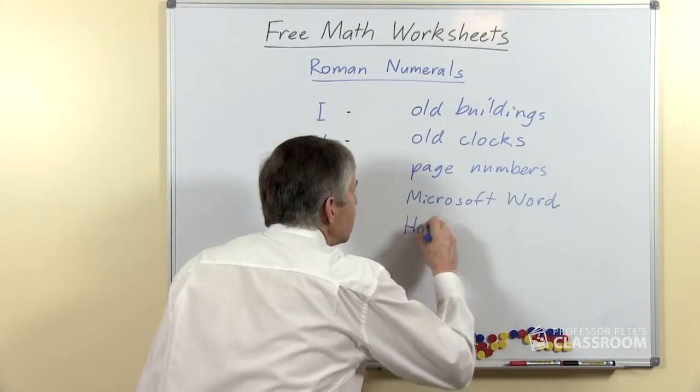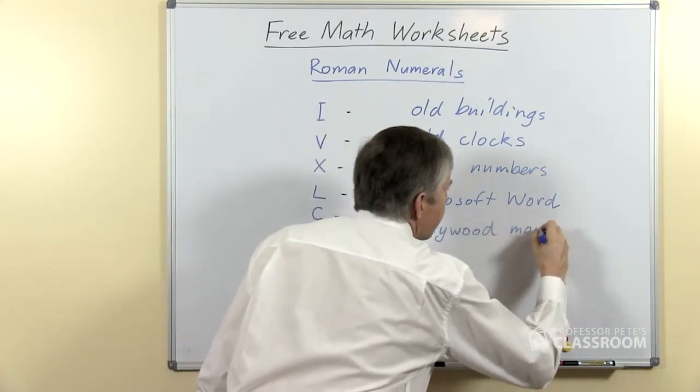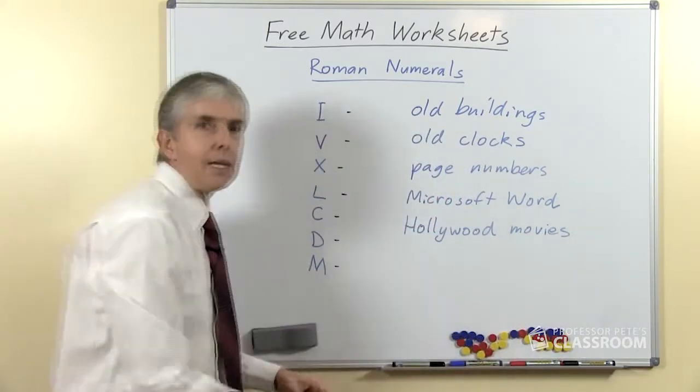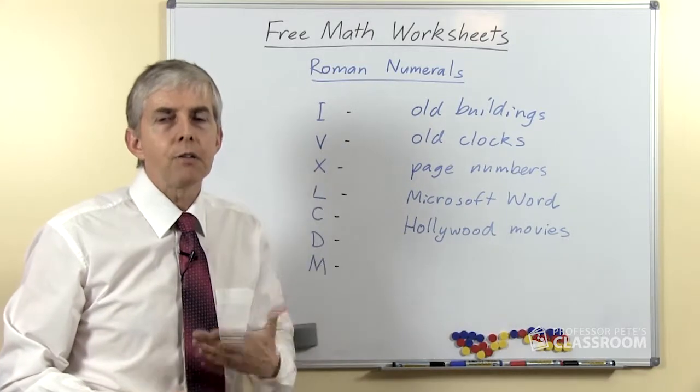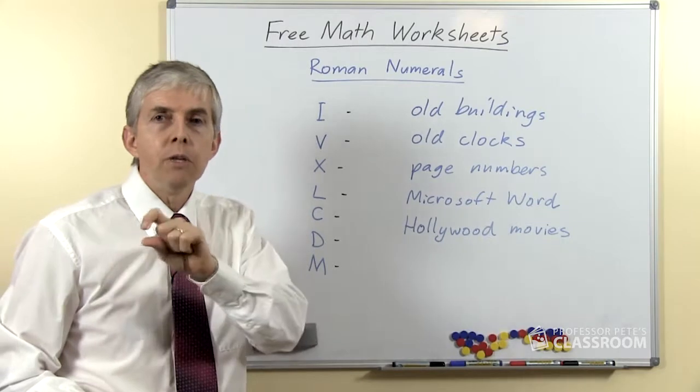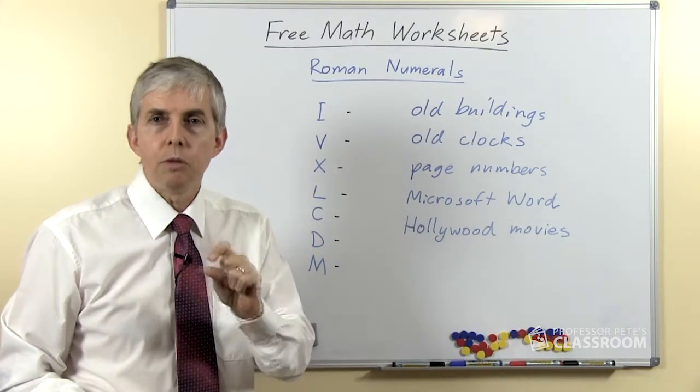And the last one, you might have noticed this yourself in Hollywood movies—not in the movie itself, but at the end. Right at the very end of the credits, if you watch it to the very end, there's quite often a Roman numeral saying the year that the movie was made.